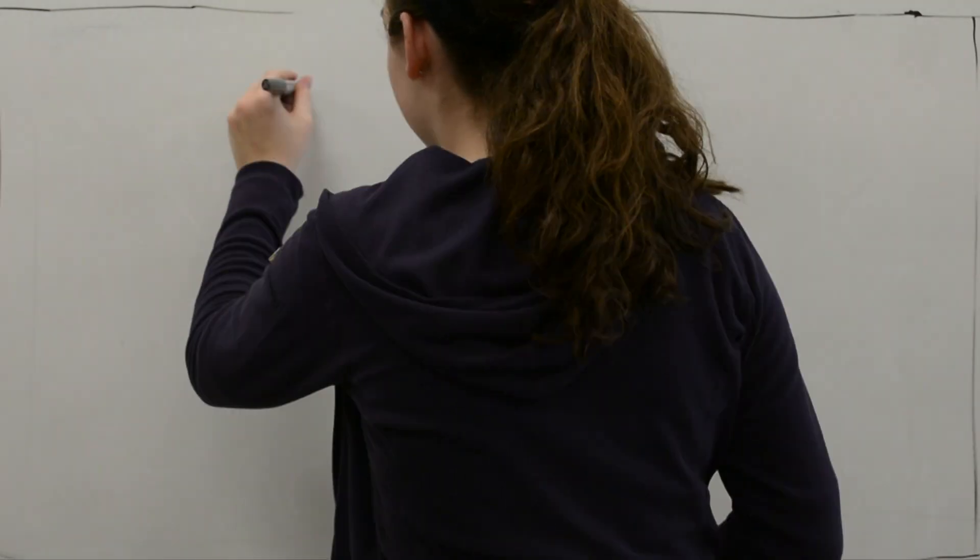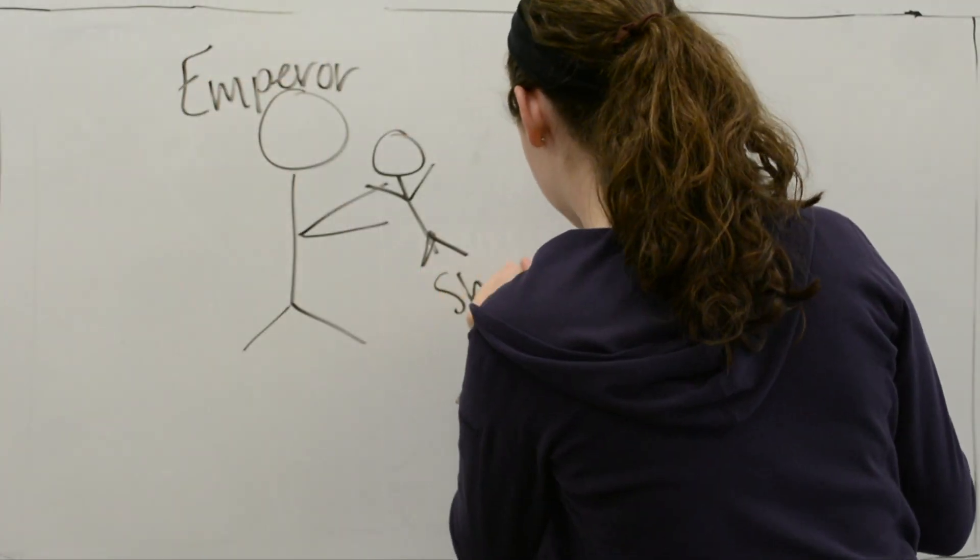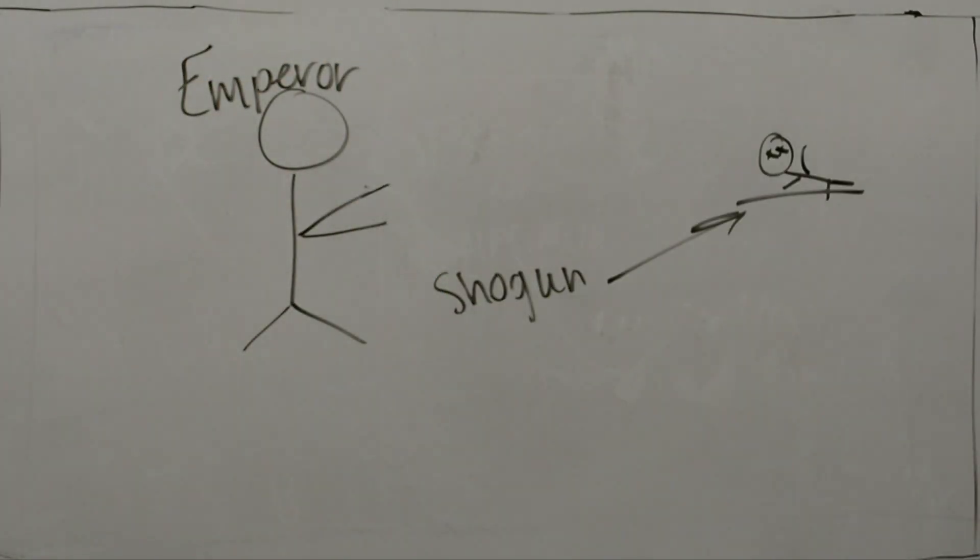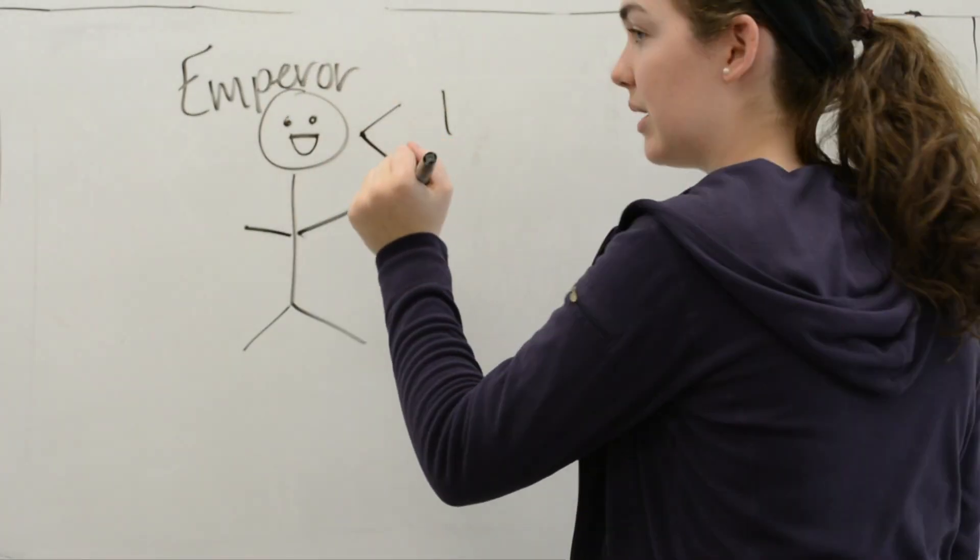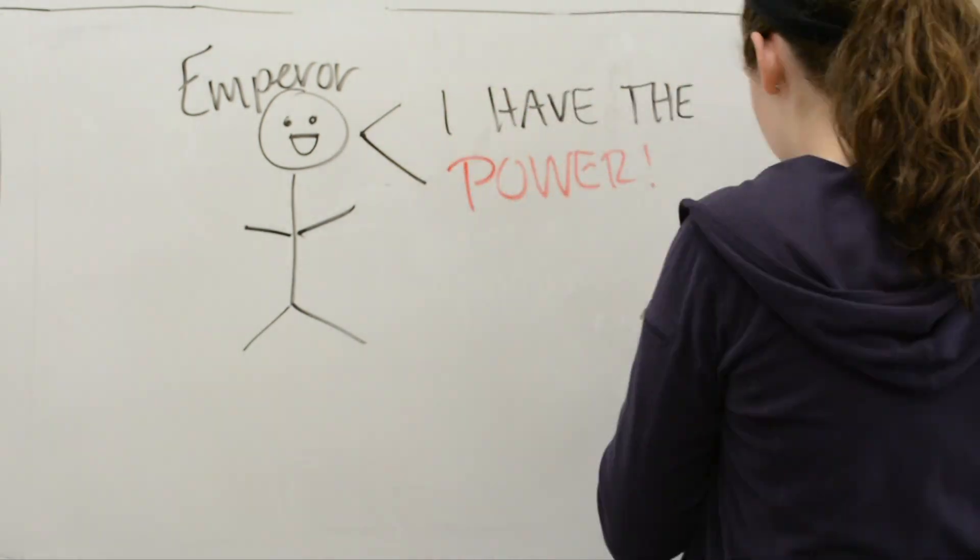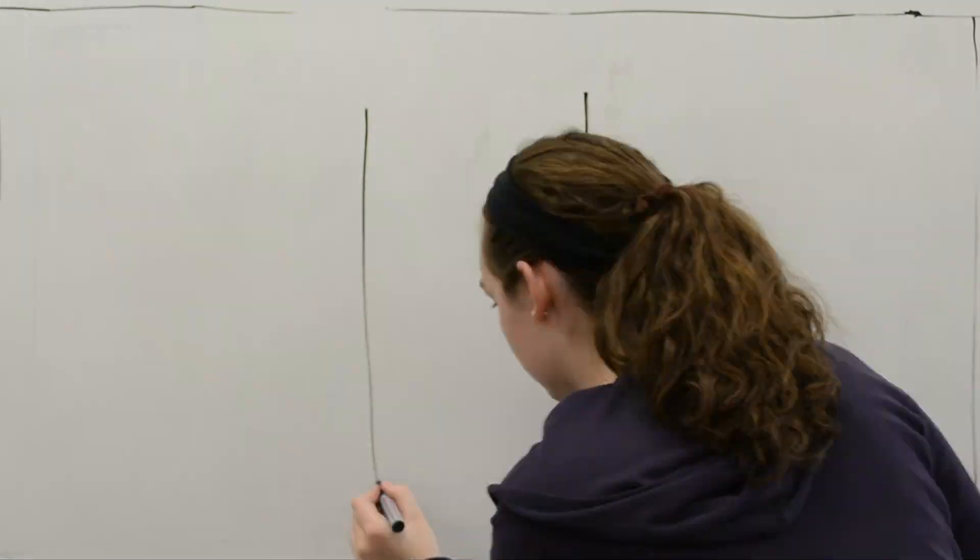Following this initial opening, the emperor threw out the shogun and took complete power. He started to modernize Japan so that they would not be an easy target for the western countries to take over, as Britain had done in the opium wars.